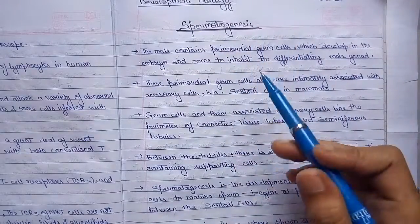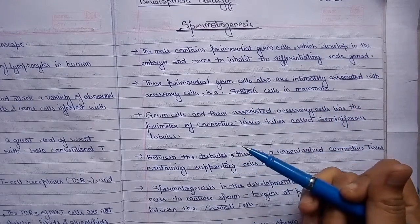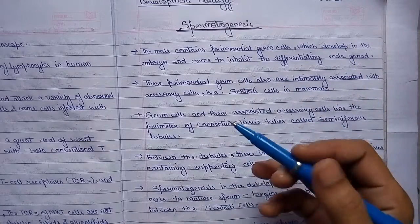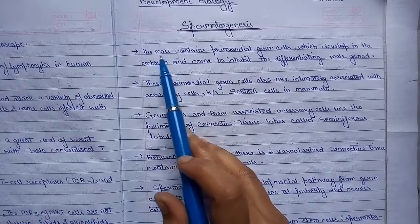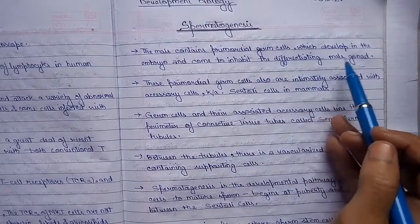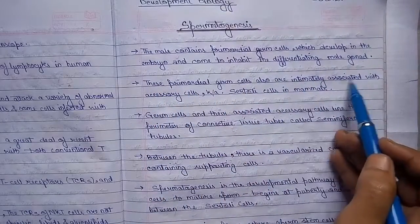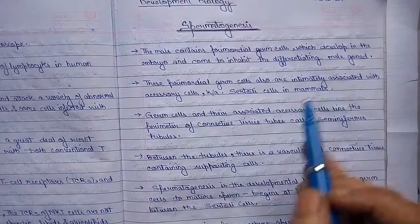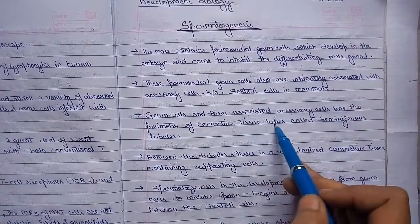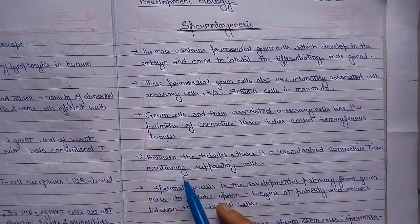Today we learn spermatogenesis. It is a topic under Core 12 of developmental biology in Semester 5, covering the BBMKU portion. The male contains primordial germ cells which develop in the embryo and come to inhabit the differentiating male gonad, the testis. These primordial germ cells are intimately associated with accessory cells known as Sertoli cells in mammals. Germ cells and their associated accessory cells line the perimeter of connective tissue tubes called seminiferous tubules. Between the tubules, there is a vascularized connective tissue containing supporting cells.